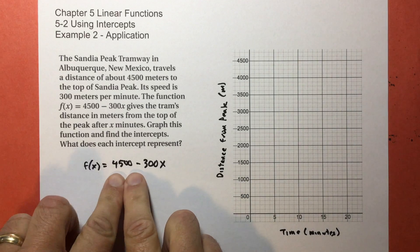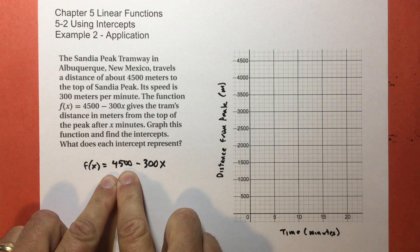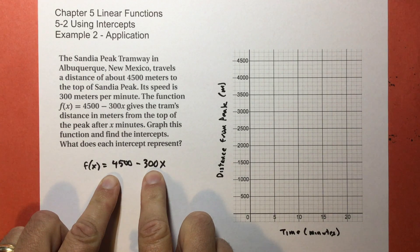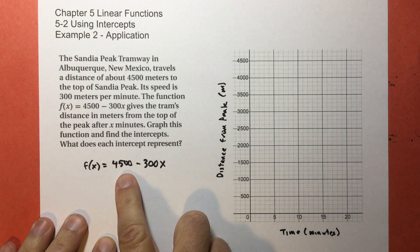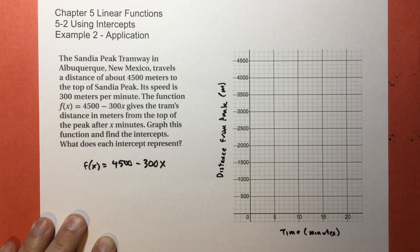tells how many meters you have from the top of the peak after x minutes. So, when you start, you are 4500 meters away from the top. Every minute, you travel 300 meters, so you're getting closer. After the first minute, you're at 4200. After that, you're at 3900. Then after three minutes, you're at 3600. And that keeps going down as you get closer. The distance you are away goes to zero as you get closer.